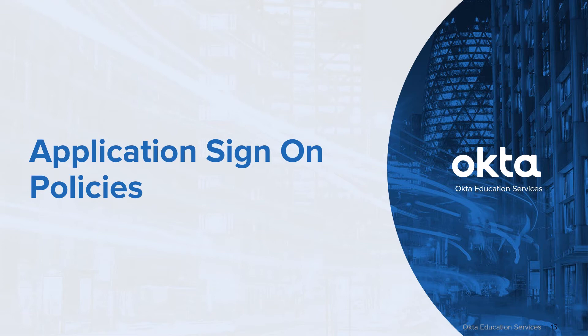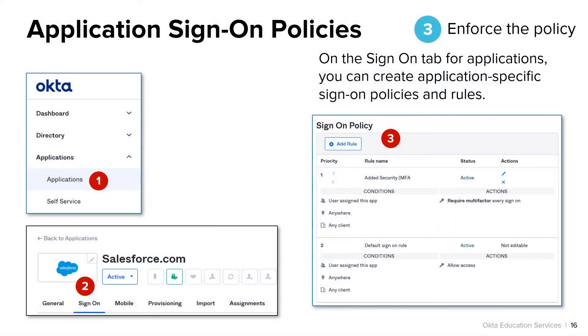For example, while within the corporate network, perhaps you do not require employees to provide MFA when they access their Okta accounts from their workstations, but when they attempt to access a sensitive application such as their online calendar via Google — even while on network — you may still want to challenge that user with MFA. This can be done by leveraging application-level sign-on policies, a feature of Okta's Adaptive MFA.